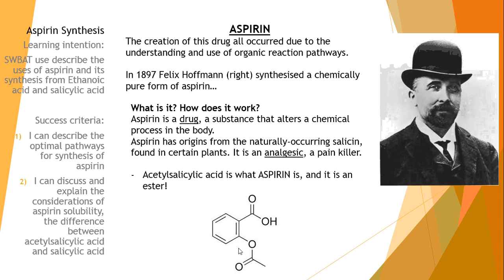It is a drug, and drugs are substances that alter a chemical process in the body. Aspirin does that by being a painkiller. Aspirin has its origins from a naturally occurring salicin found in certain plants. And this goes back to before Common Era, before Christ, back in BC times, where people would chew on these certain plants because it helped them get through the pains of childbirth and other pain-related injuries and outcomes.